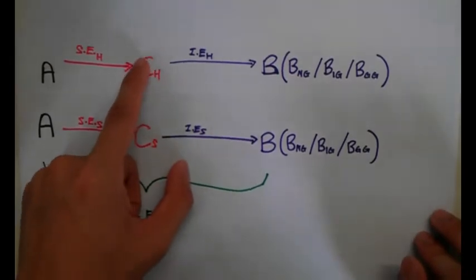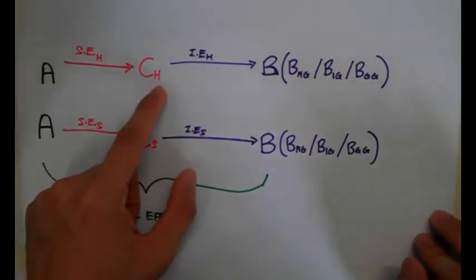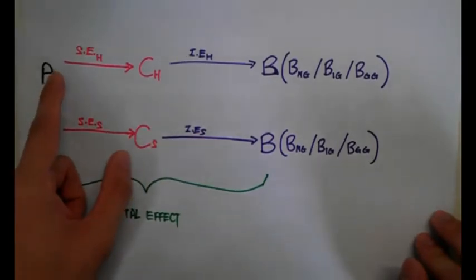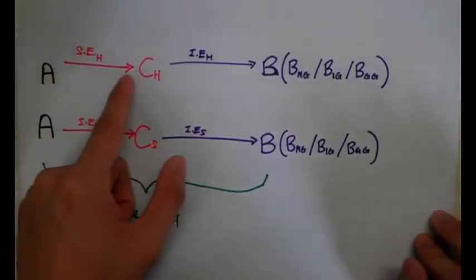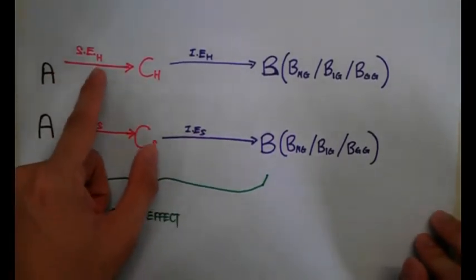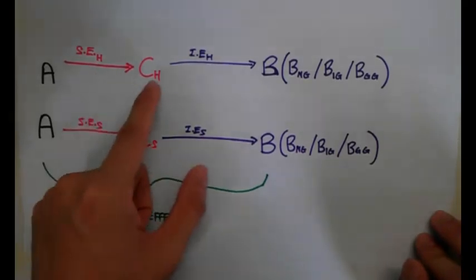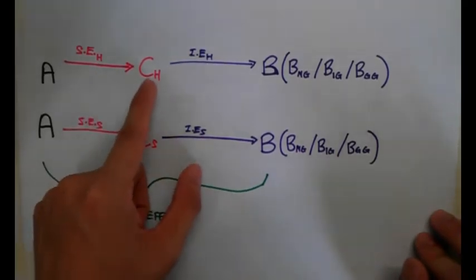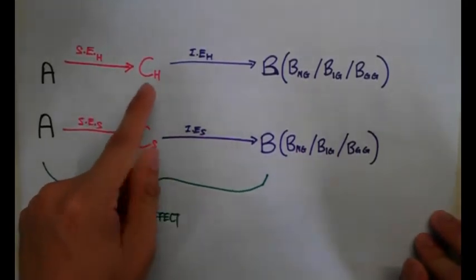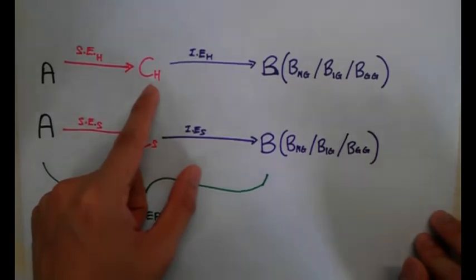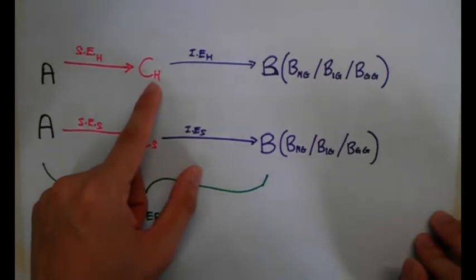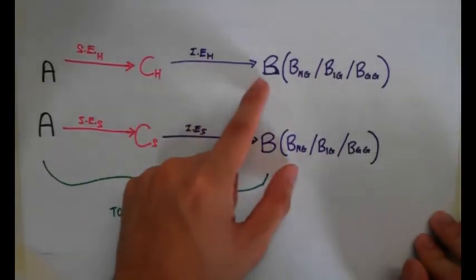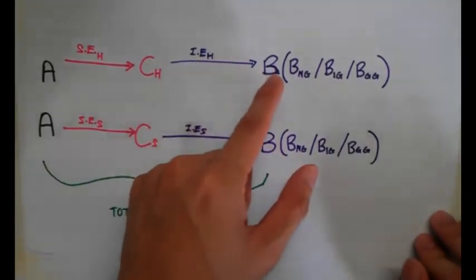The reason for the C with a small superscript H is to show that this is the substitution effect for the Hicksian definition of real income. This point C is where the substitution effect under the Hicksian definition of real income has brought us to, followed by the income effect for Hicksian to point B.